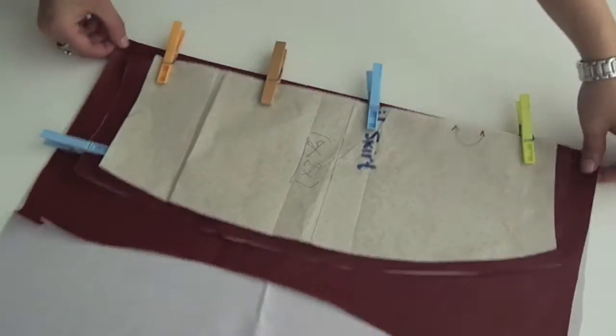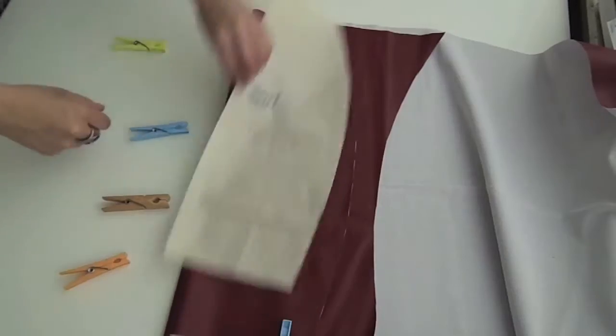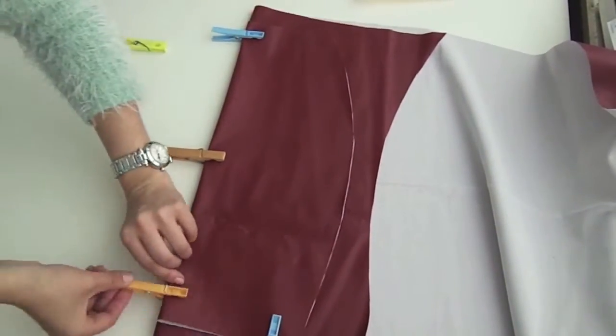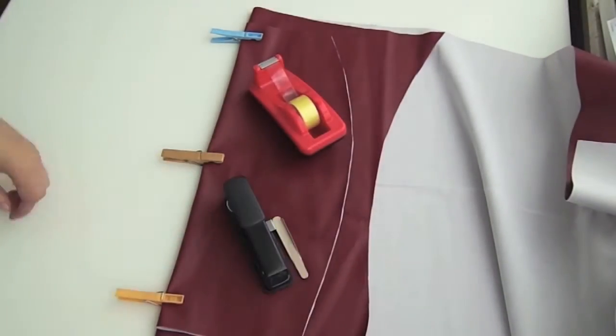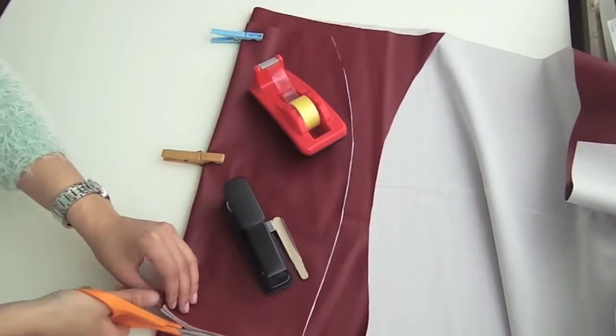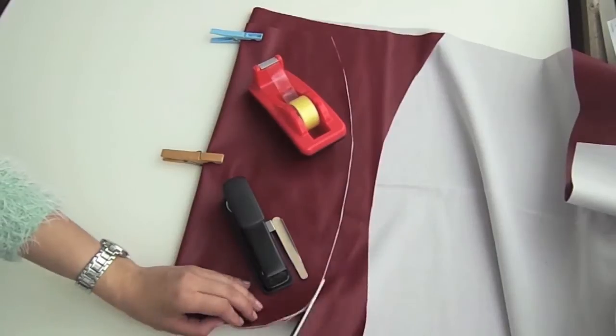To cut the second piece, I'm using the first one as a guide so I don't have to measure again. And then just cut all the way around, making sure that your pattern or your piece doesn't move. That's why I put these weights on top of it.